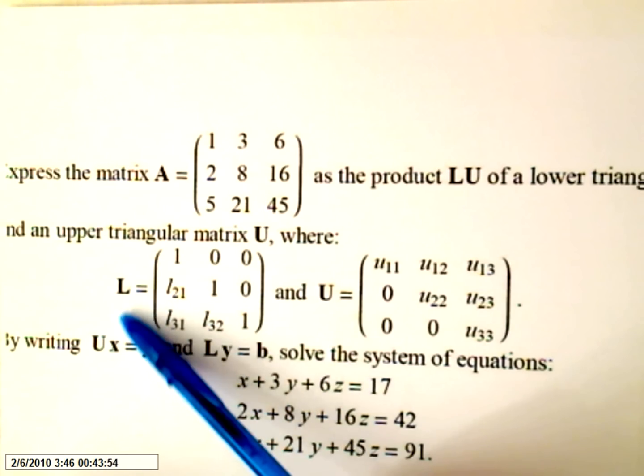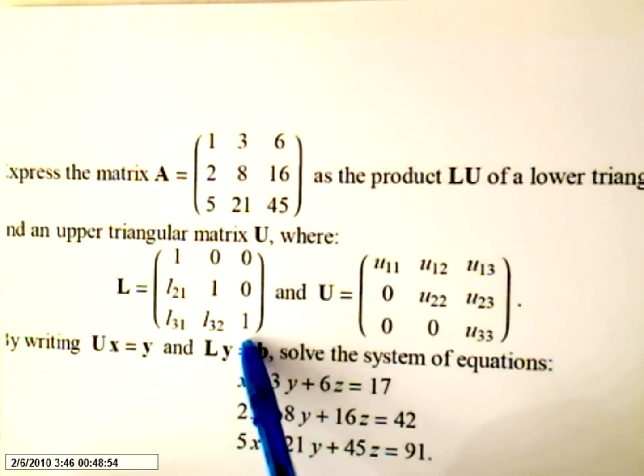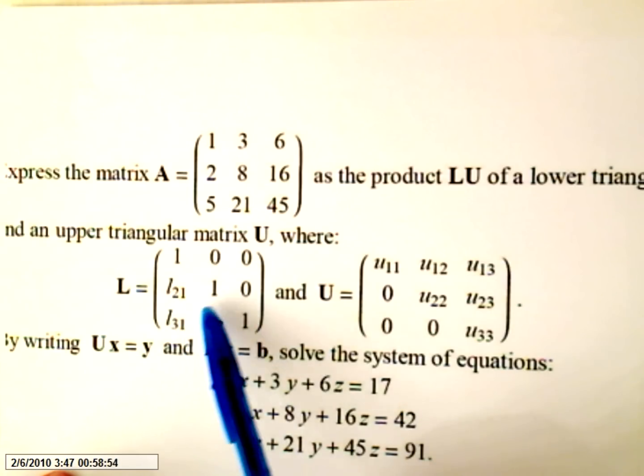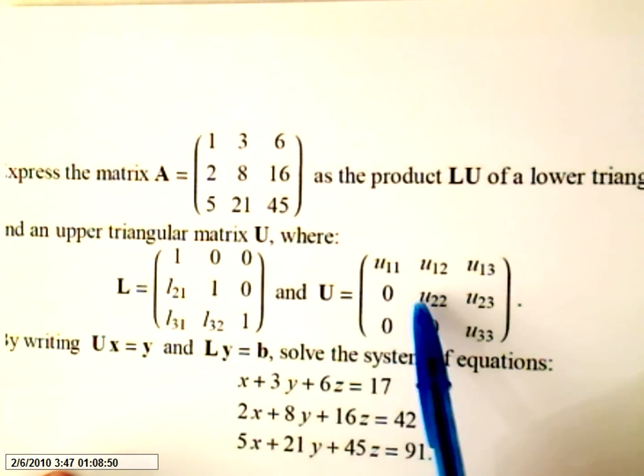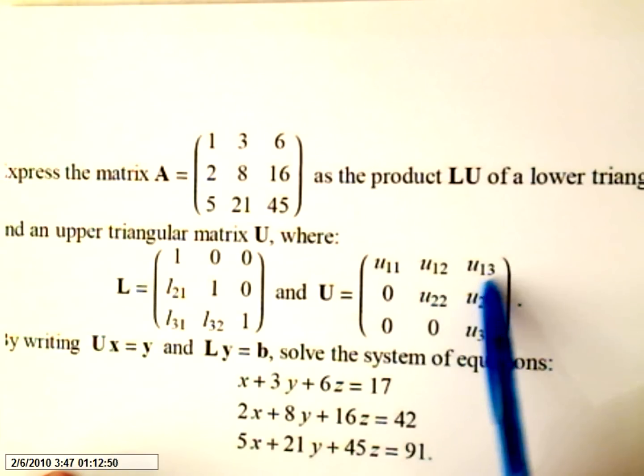So this is the format of any lower triangular matrix: it will have this format 1, 1, 1, values here and 0, 0, 0. And any upper triangular matrix will be like this: U11, U12, U13, U22, U23, etc.